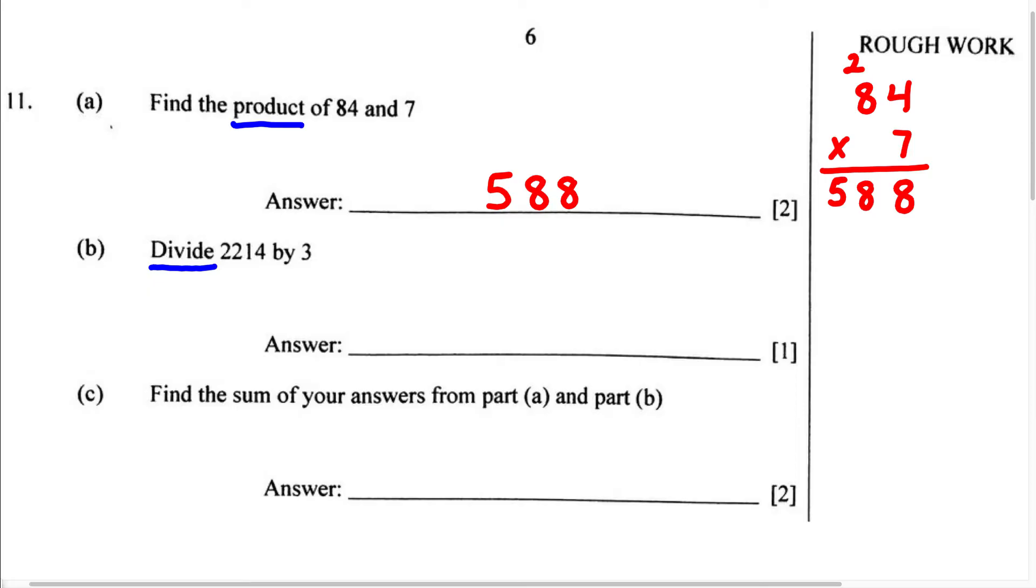Since it says we're dividing 2,214 by 3, we know that's going to look like this: we have 2,214 divided by 3. Therefore, 3 is going to be the divisor and 2,214 is going to be the dividend.